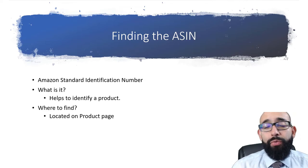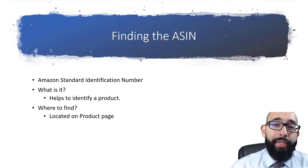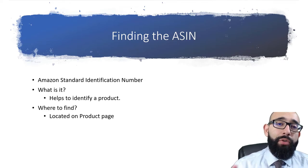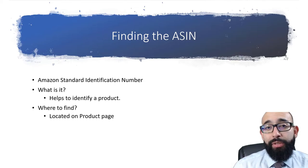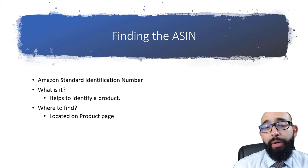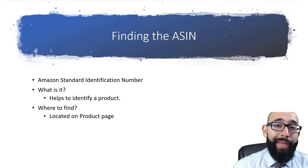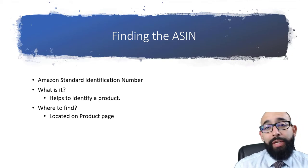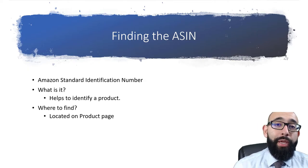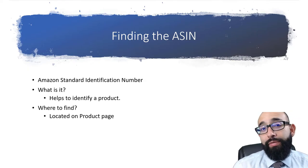There are two ways to find it. The first way is on your browser — at the top in the Amazon.com address bar, there's the 10-character alphanumeric number. The other way is to do a Control-F or Command-F and type in ASIN. That's going to bring you to the bottom of the product page where it will have the number. Once you have it, you'll be able to list that product or see if you're gated or ungated.